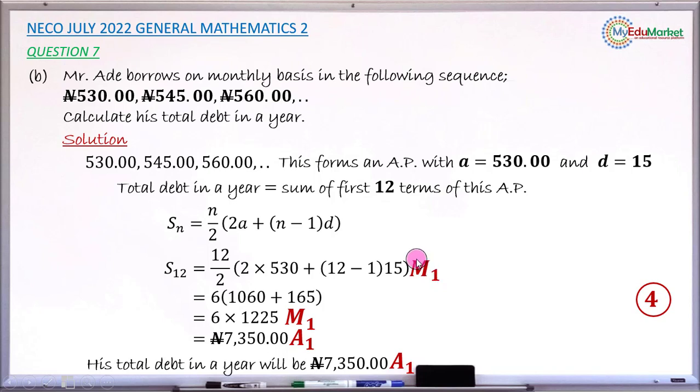And this method 1 mark is for substituting n, a, and d in the formula for finding sum of first n terms of an AP correctly. If you substitute correctly, you have this method 1 mark.